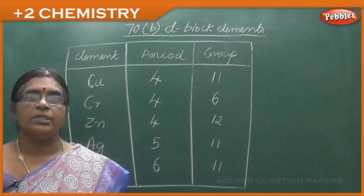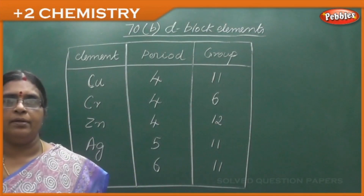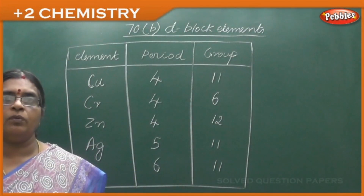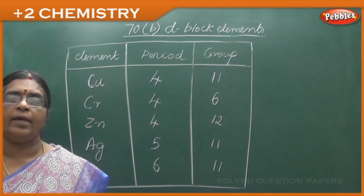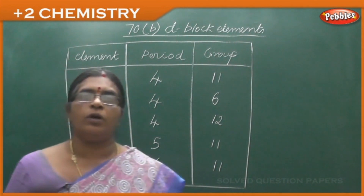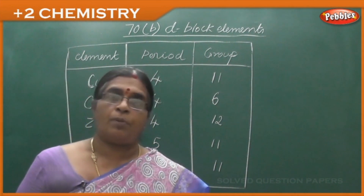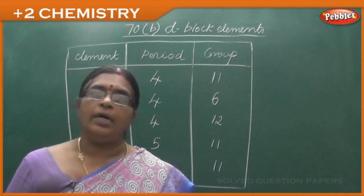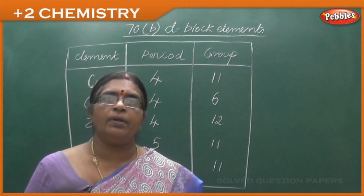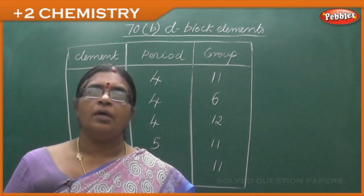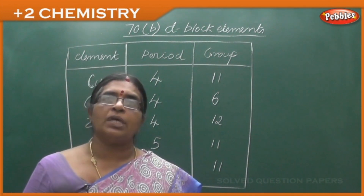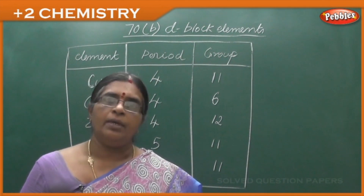Now we will go to 70B. Up to now I talked about 70A — around 8 extra problems I have talked, other than the question paper. I have given you extra 8 problems. Now we will go to 70B.